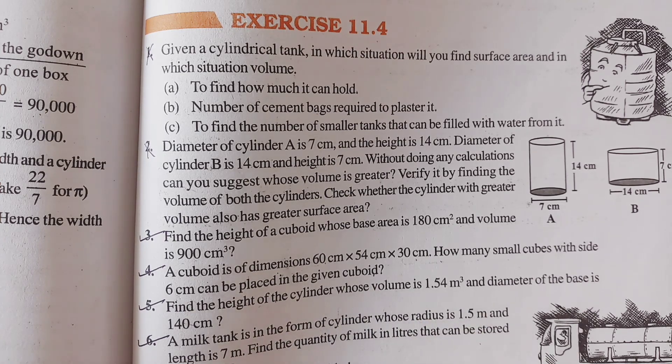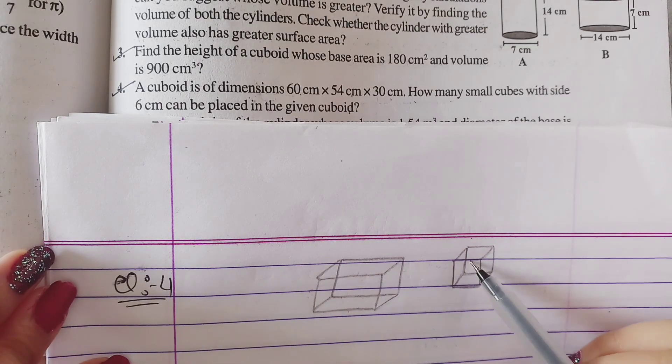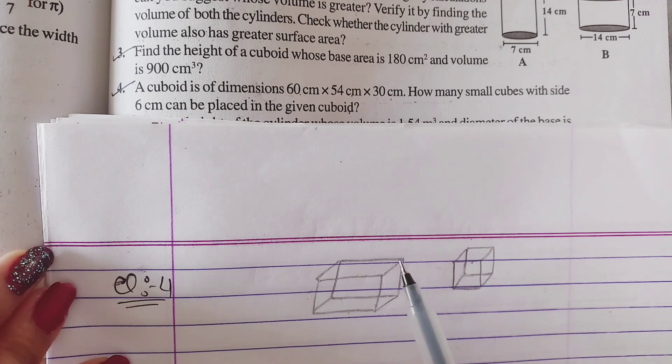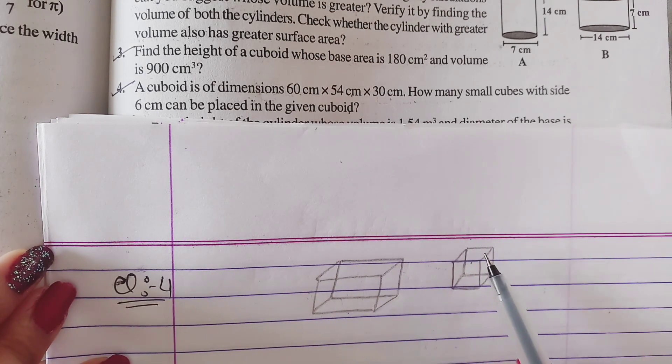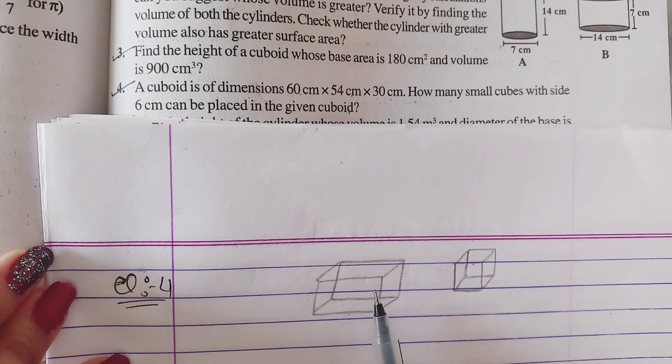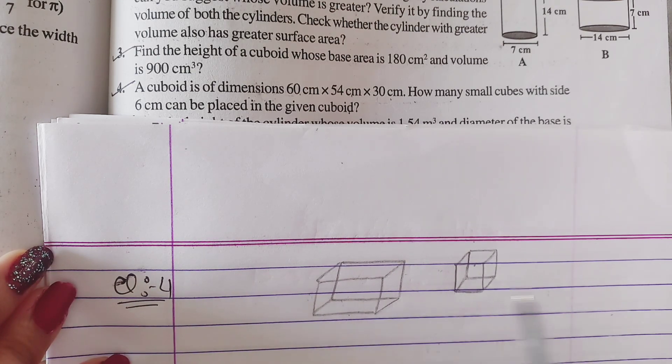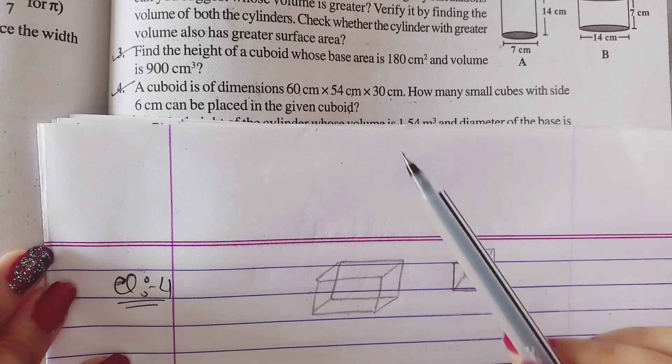Now see, this is the cuboid and this is the cube. This is the cuboid box. The big box is cuboid shape. Now the cuboid measurements are given.